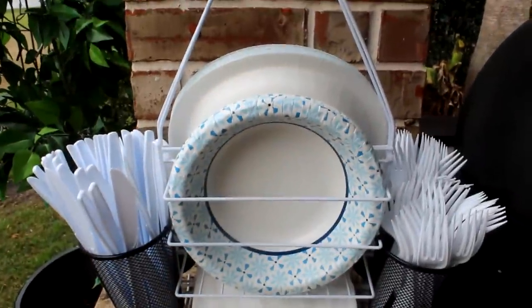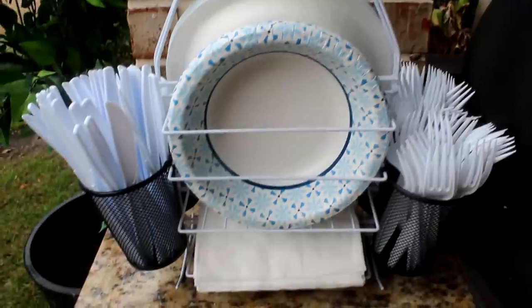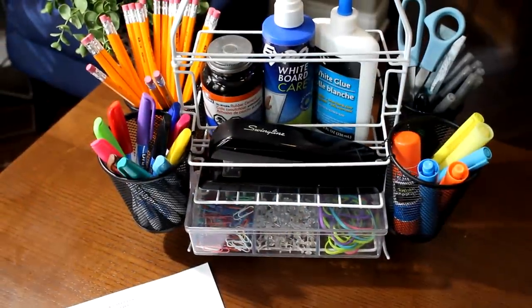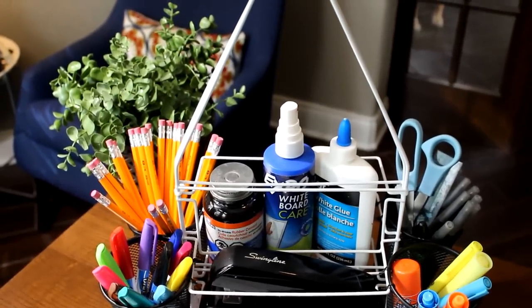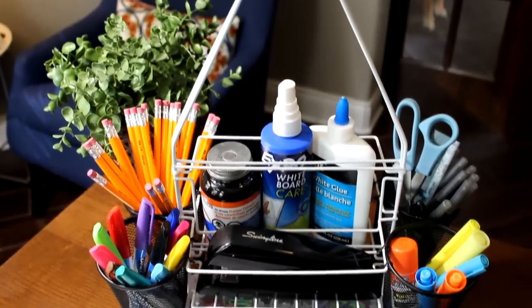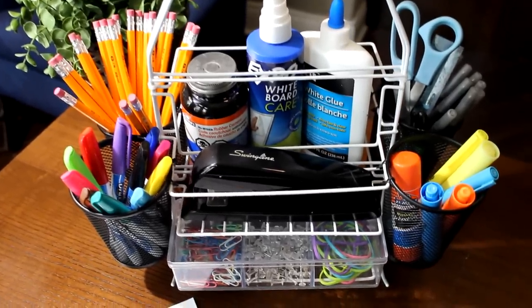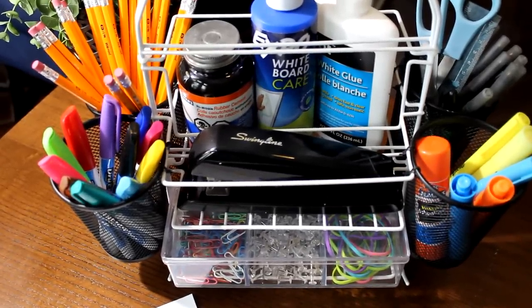Some of the favorite organizers from this series have been the standalone caddies, like this one for paper plates and plastic cutlery, which also makes a great desk and office supplies organizer. Here you can see that same caddy now with pens, pencils, dry erase markers, and highlighters as well as a dollar tree acrylic box holding paper clips, rubber bands, and tacks. There is also space for a full-size stapler, glue, and dry erase spray, and in the back a spot for post-it notes and tape.